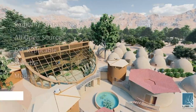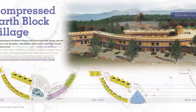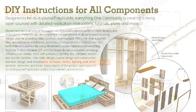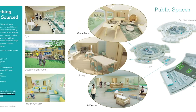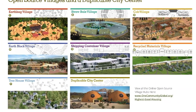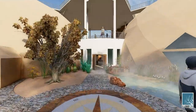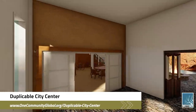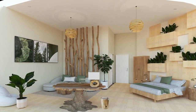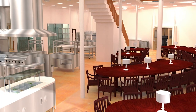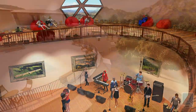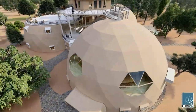The One Community approach to highest good housing is eco-artistic home building that is affordable, sustainable, do-it-yourself duplicable, resource and space efficient, and consists of seven different sustainably constructed village models. One Community is also creating an open source duplicable city center designed to be LEED Platinum certified, provide 12 guest rooms, dining for over 150 people, and laundry and recreation space for over 300 people — all while saving money, time, space, and resources.